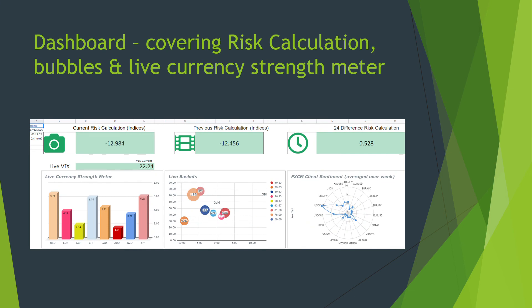We get the dashboard covering risk calculation, the bubbles, and the live currency strength meter. Risk calculation is essentially SSI based on retail sentiment — when they sell it becomes a buy, and when they buy it becomes a sell for us. As you can see, they're very heavily net short on indices on average, and we have a calculation from the 24-hour difference over time. Time is the key component to sentiment analysis — where has the herd moved over the last day? That gives us a nice heads-up of what's going to happen. I wouldn't expect to see any major falls on the indices because of this — it would be payday for the herd, and that would be unusual. So that's just a quick overview of the dashboard.